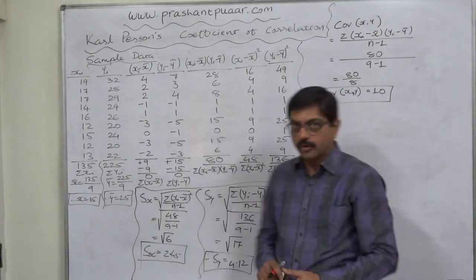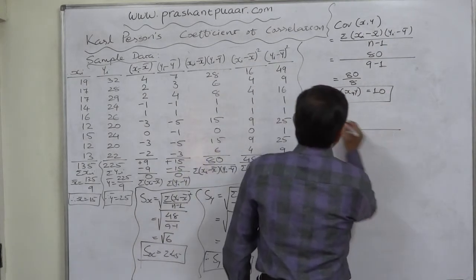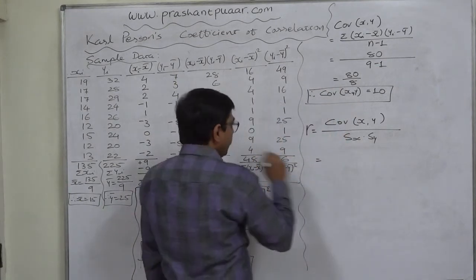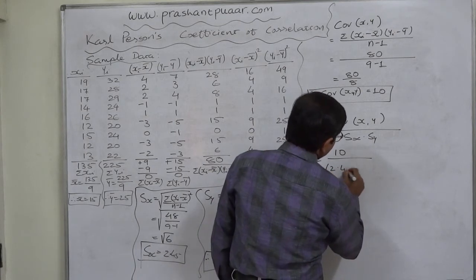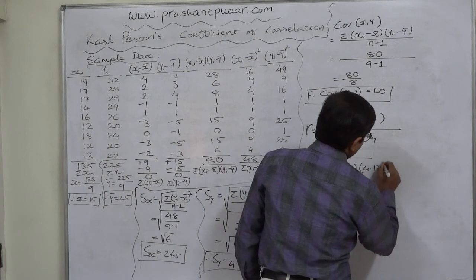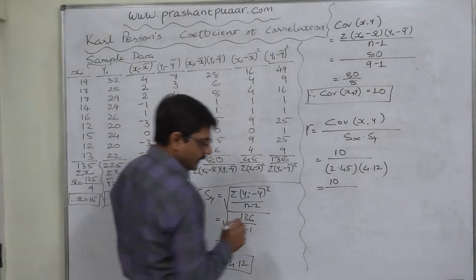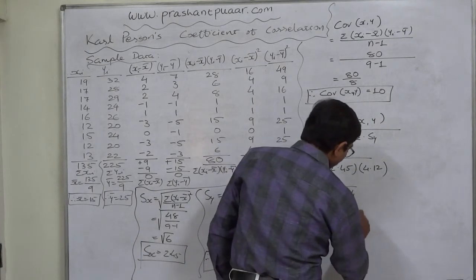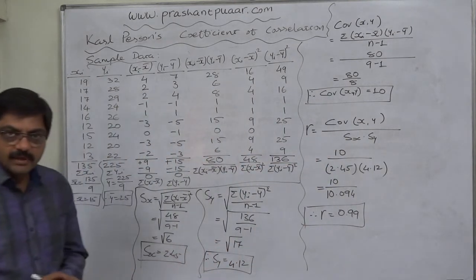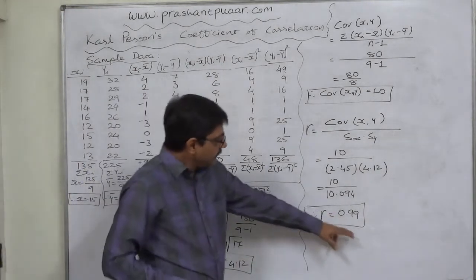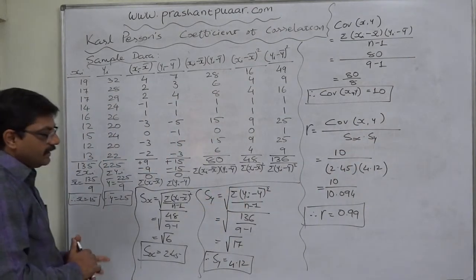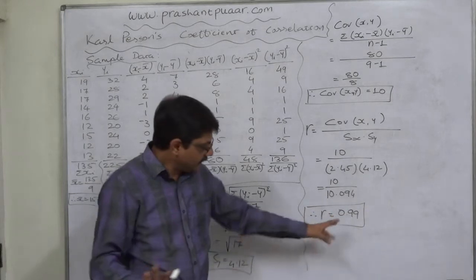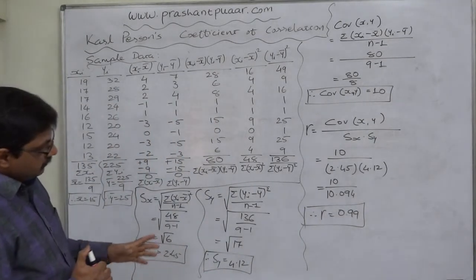Now we have all three ingredients for the formula by definition. The coefficient of correlation is the ratio of the covariance of X and Y to the product of the two standard deviations. Covariance is 10, Sx is 2.45, and Sy is 4.12, so r = 10 / 10.094 ≈ 0.99. This is not perfect but very near to a perfect positive relationship, so we call it a high positive correlation.